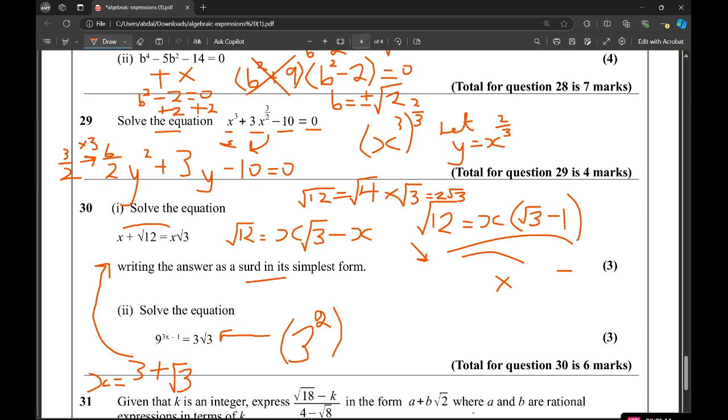In a bracket, 3x minus 1. Equals, now 3 is just 3 to the 1. Root 3 is 3 to the power of a half. So 3 to the 1 times 3 to the power of a half.